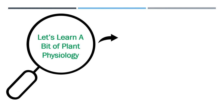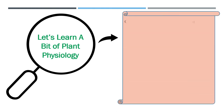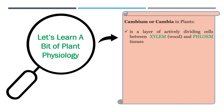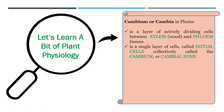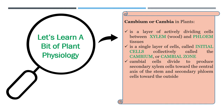So let's learn a bit of plant physiology. What is cambium or cambia in plants? This is a layer of actively dividing cells between the xylem or wood and the phloem tissues. It is a single layer of cells called initial cells, but they are collectively called the cambium, cambial zone, or cambium layer. These cambial cells divide to produce secondary xylem cells going towards the central axis of the stem, and secondary phloem cells towards the outside to form part of the bark.